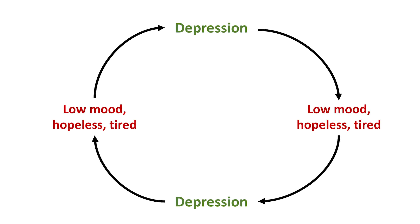Diagnoses in mental ill health don't give you any information about the cause — they're very circular. Why are you suffering from low mood, hopeless and tired? Because I'm depressed. Why are you depressed? Because I'm feeling low mood, hopeless and tired. So we have all these different diagnoses in mental ill health, and they don't give us any information about cause. What they do is give a description for a set of symptoms you might be struggling with. To see where these sets of symptoms are described and assigned to these different diagnoses, let's take a look at the classification systems.